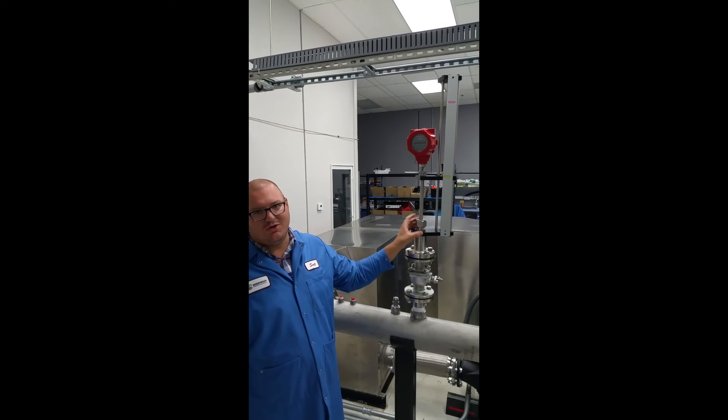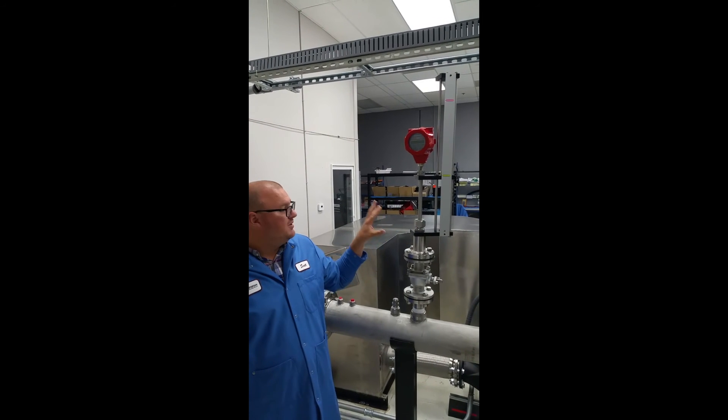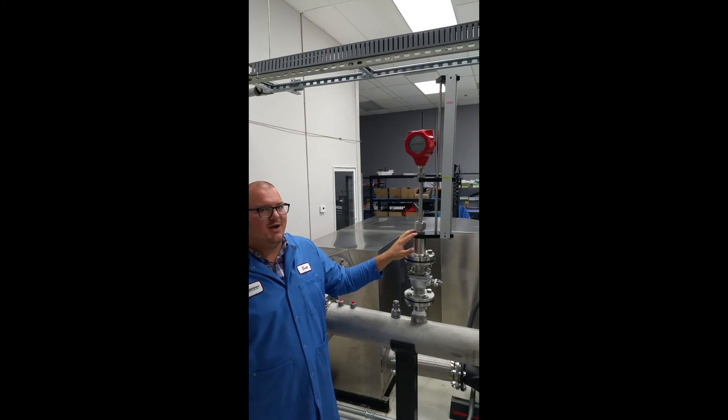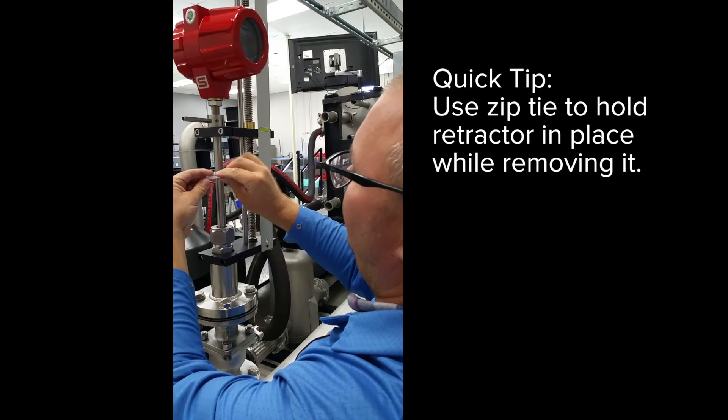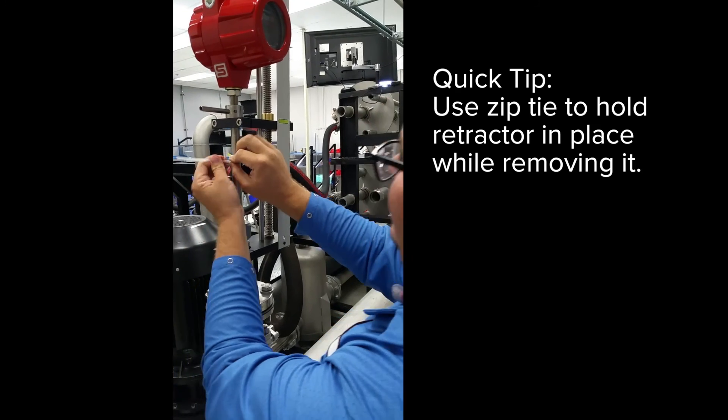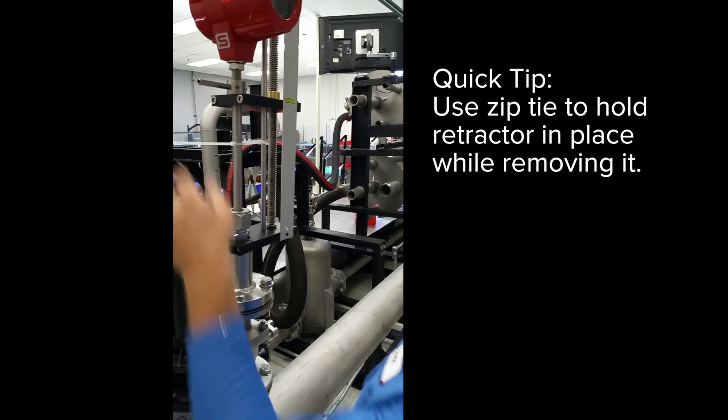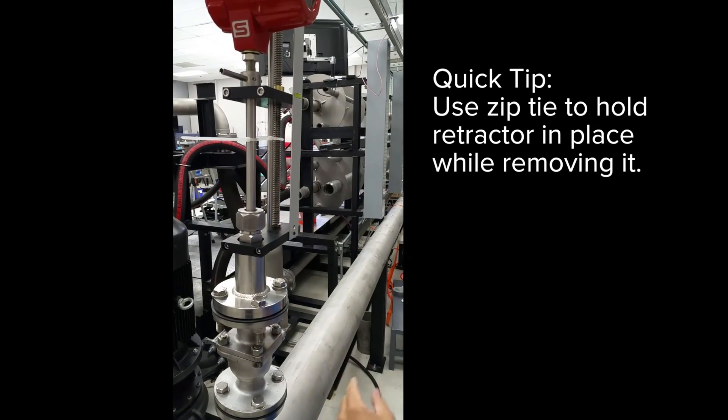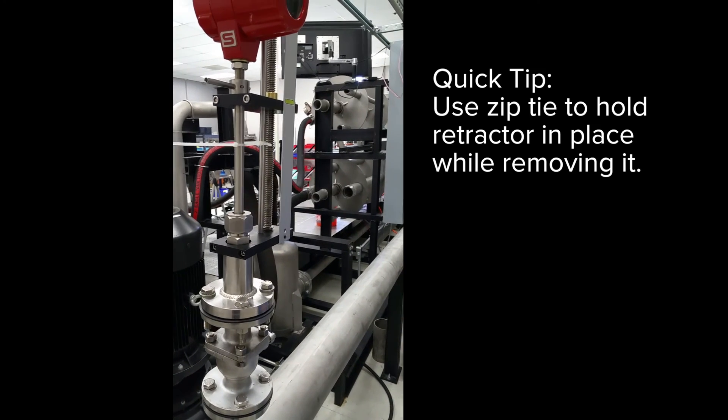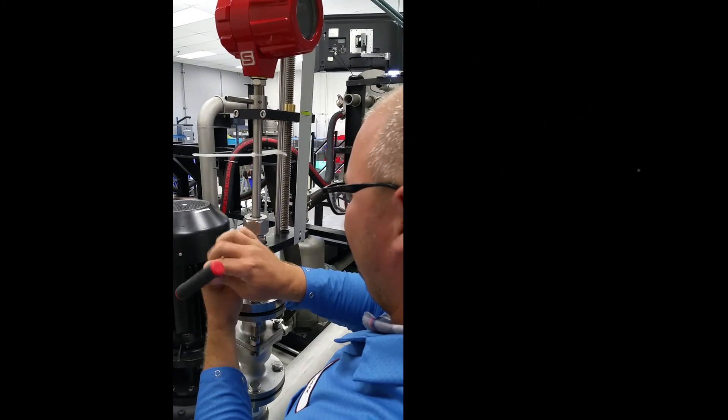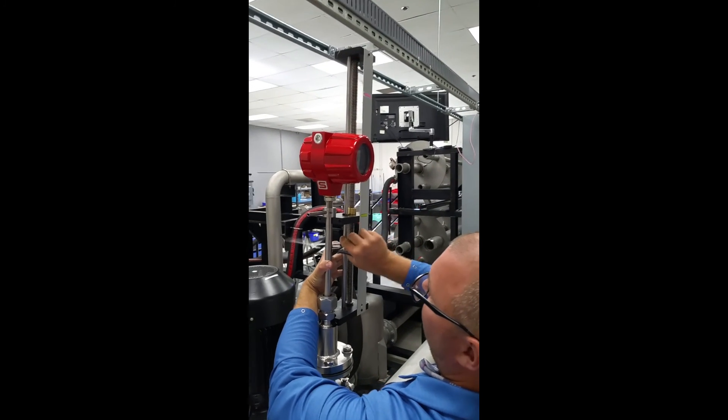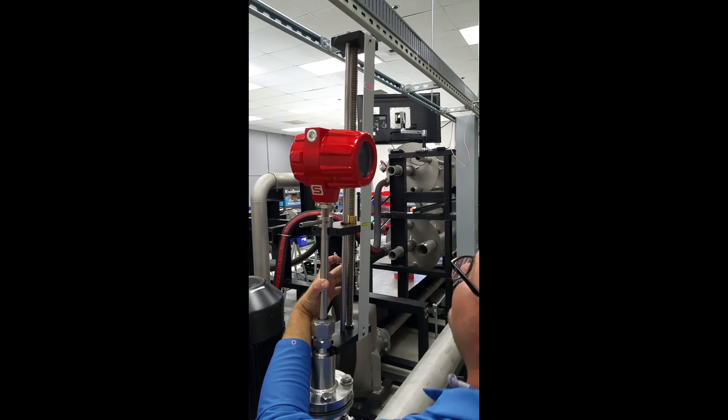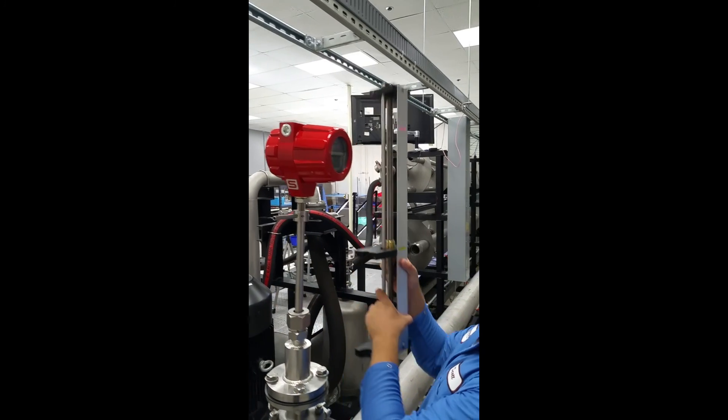Like I said, you can use one retractor for many units. So, I'm going to remove this retractor and take it to the next unit. One quick tip. You can use the wire wrap. Just secure that like this. And now I should be able to remove this without worrying about it falling over or anything like that. All right, I removed the bracket. I'm going to clip that off. And I'm ready to go to the next unit.